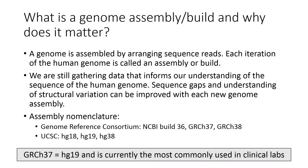There are two commonly used systems for naming assemblies. One from the Genome Reference Consortium, which has used the nomenclature of NCBI build number, such as 36, and more recently GRCH37 and GRCH38. The other comes from the University of California, Santa Cruz, and has used the nomenclature of HG number, such as HG18 and HG19. The most recent build is called HG38, to be more consistent with the GRCH nomenclature. The most common assembly currently used by clinical labs is GRCH37, which is equivalent to HG19.